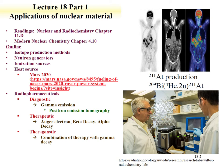Information on the production of astatine-211 can be found here. A third route for medical applications is theragnostic, which is a combination of therapy and diagnostic methods. This requires an isotope that produces an alpha or beta decay along with a photon that can be used for imaging. So theragnostic is really the combination of diagnostic and therapeutic agents. In Part 1, the discussion will be on isotope production, and in Part 2, the lecture will cover radiopharmaceuticals.